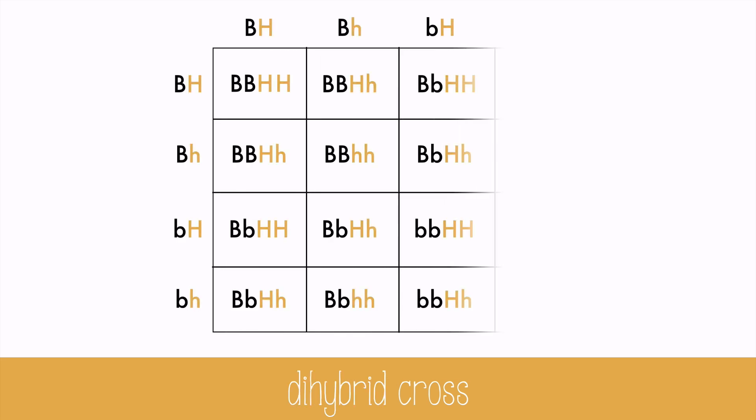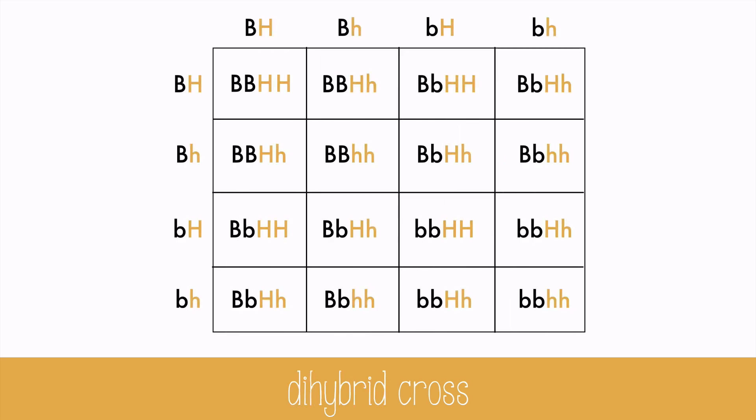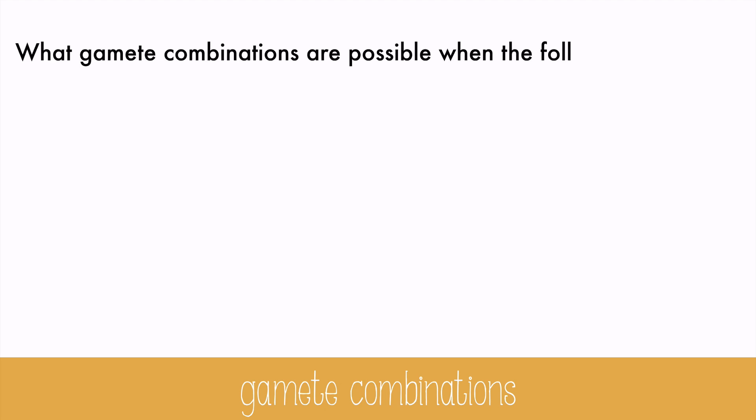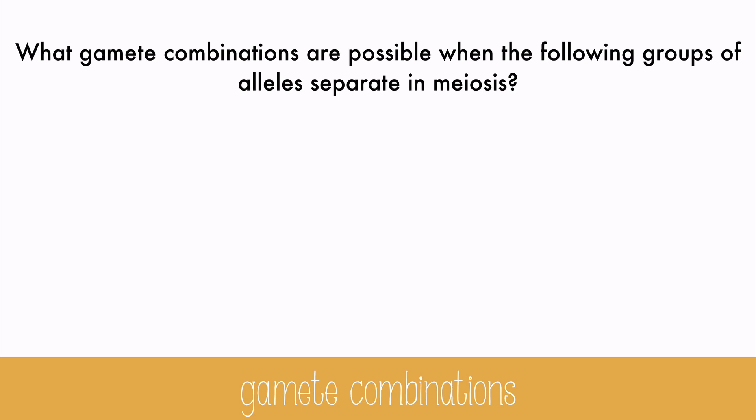It's also possible to cross more than one trait at a time. A dihybrid cross will test two traits at the same time. This is as big as a dihybrid cross will get, but it can sometimes be smaller. If you look at all the possible gamete combinations, you can figure out what the dimensions of a cross should be. So what gamete combinations are possible when the following groups of alleles separate in meiosis?